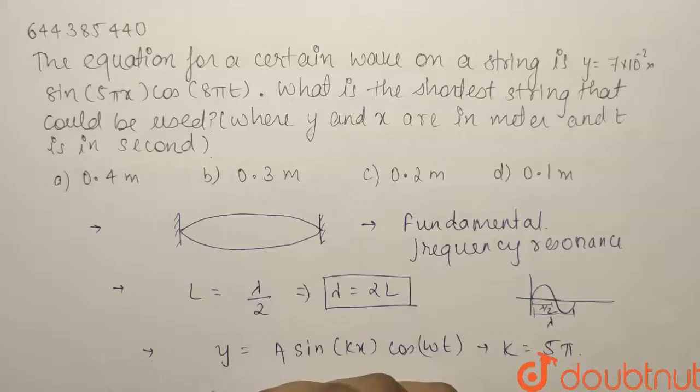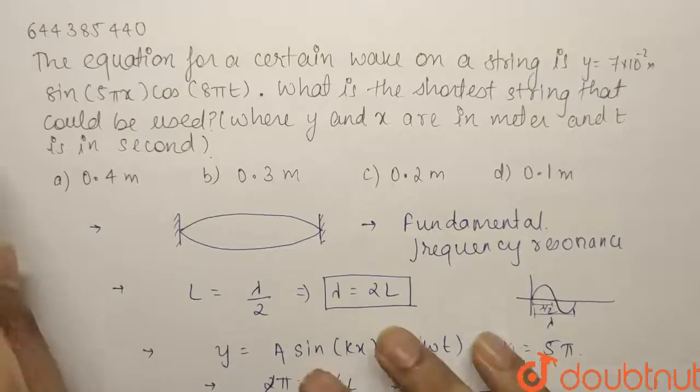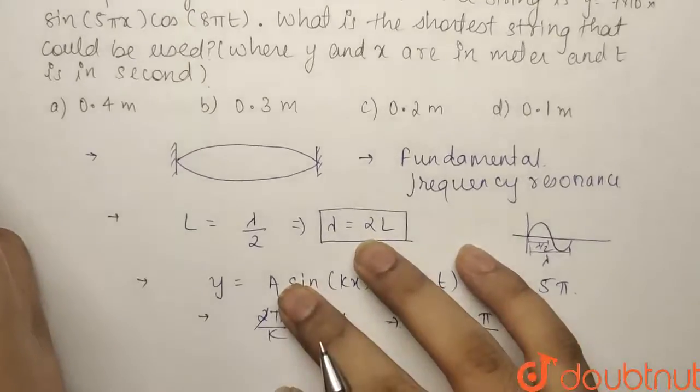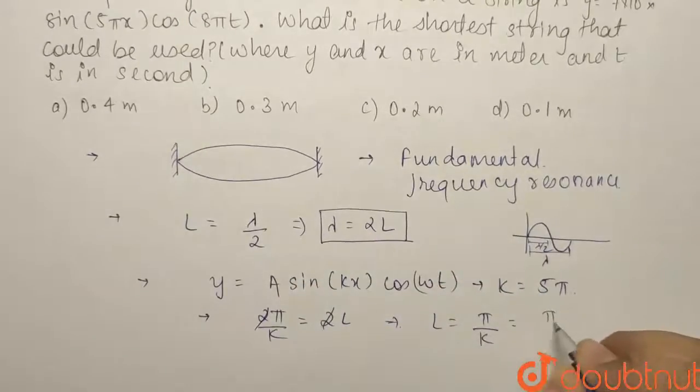We know λ = 2π/k. So 2π/k = 2L. Cancelling the 2's, our length will be π/k. Since k = 5π, our length equals π/5π.